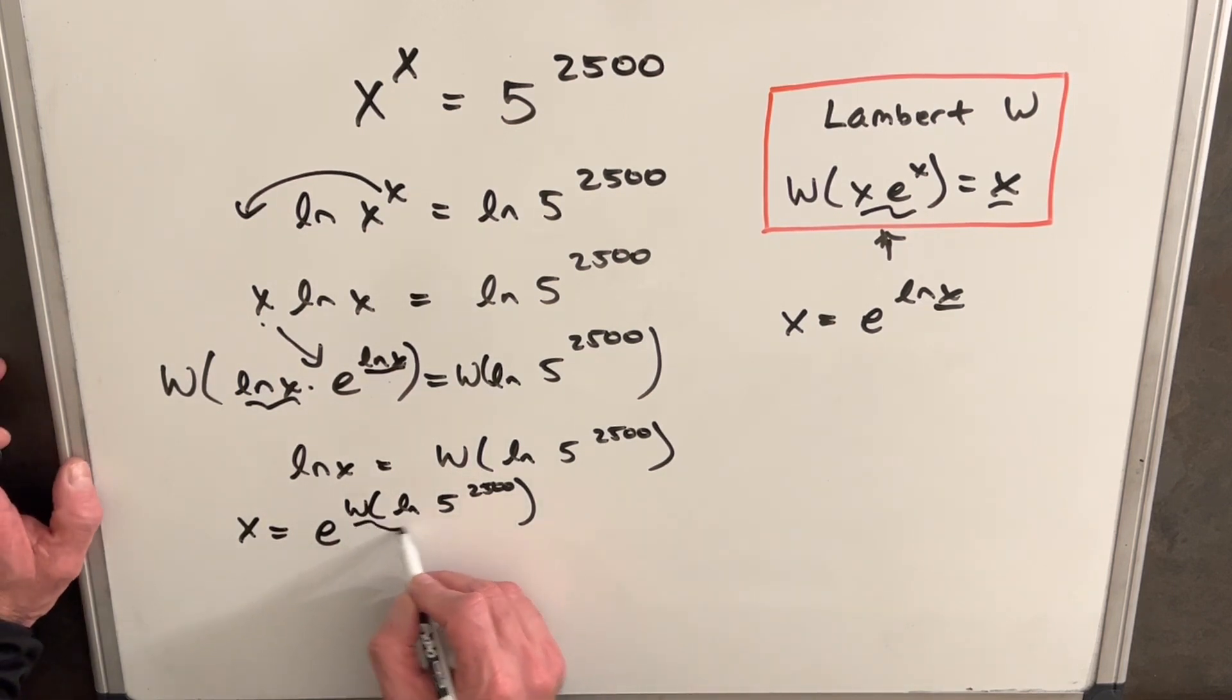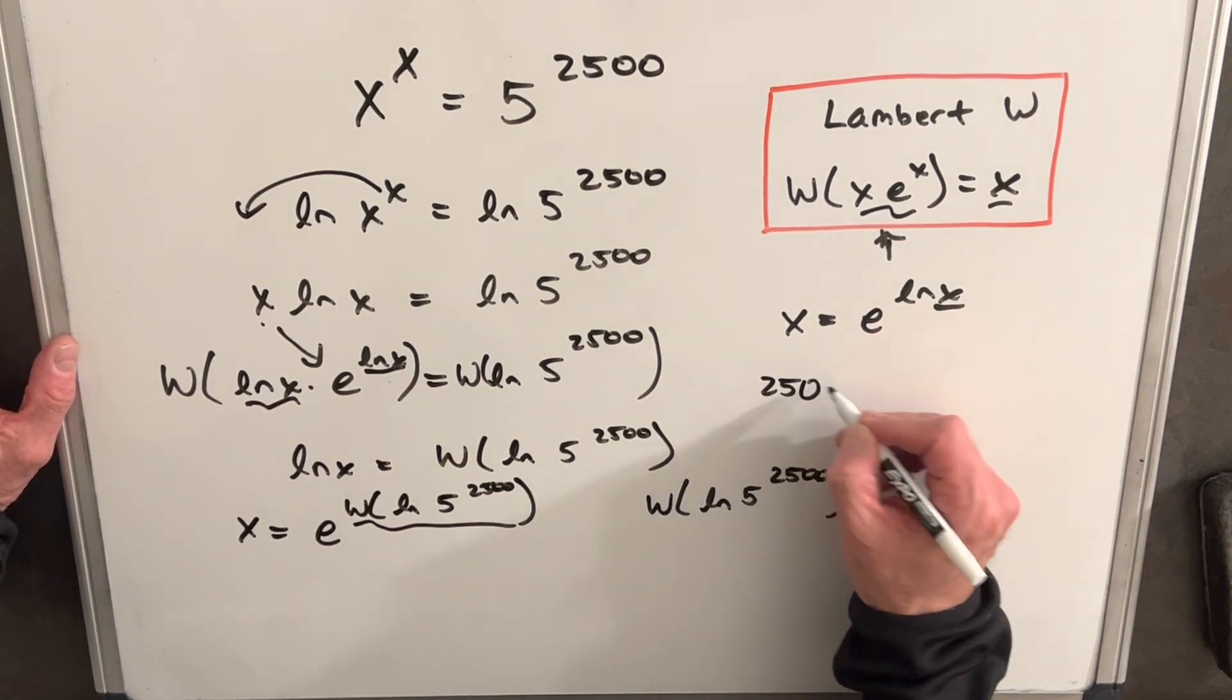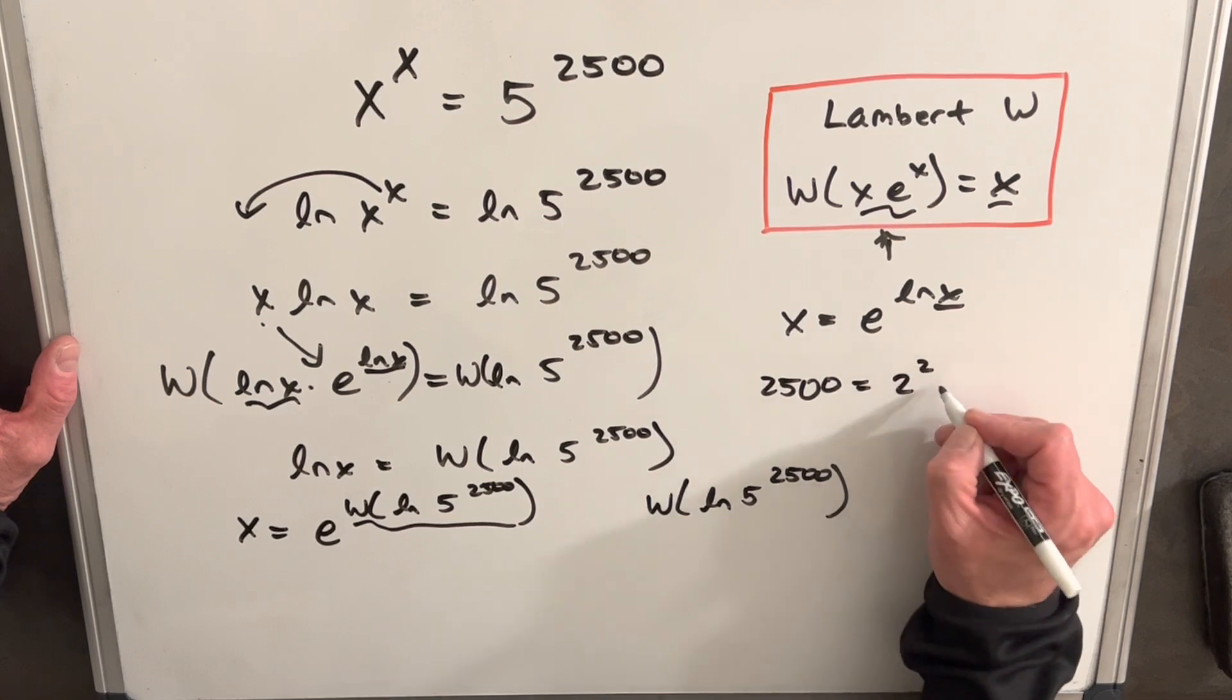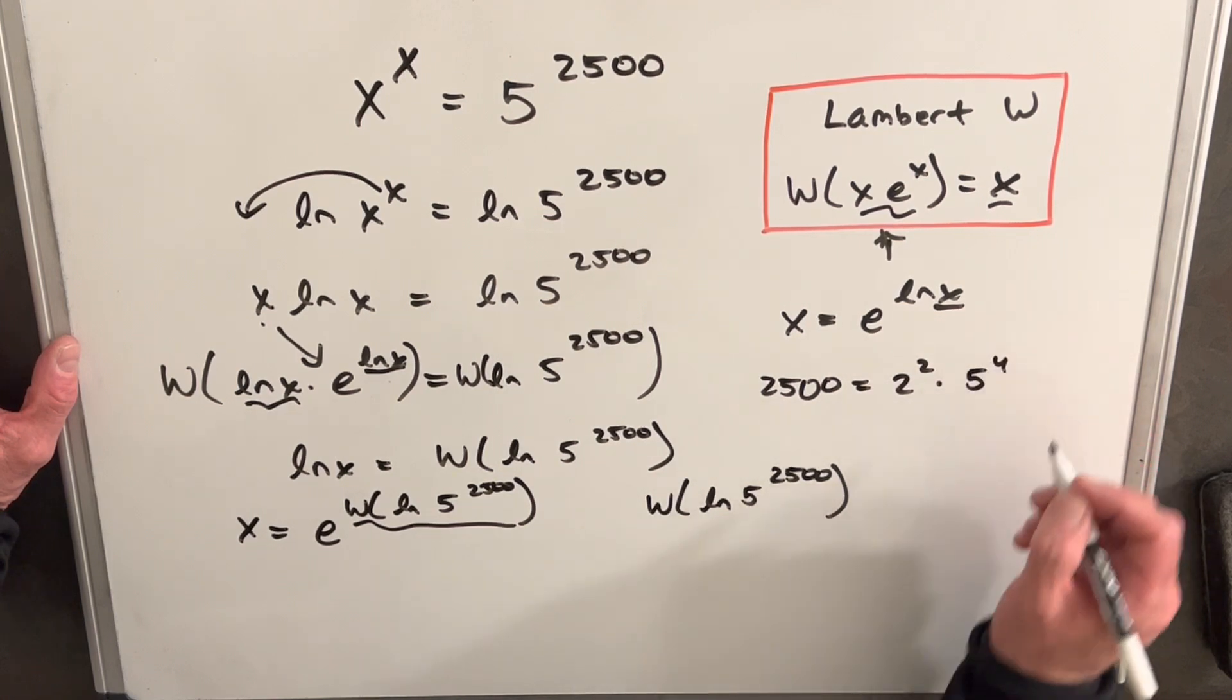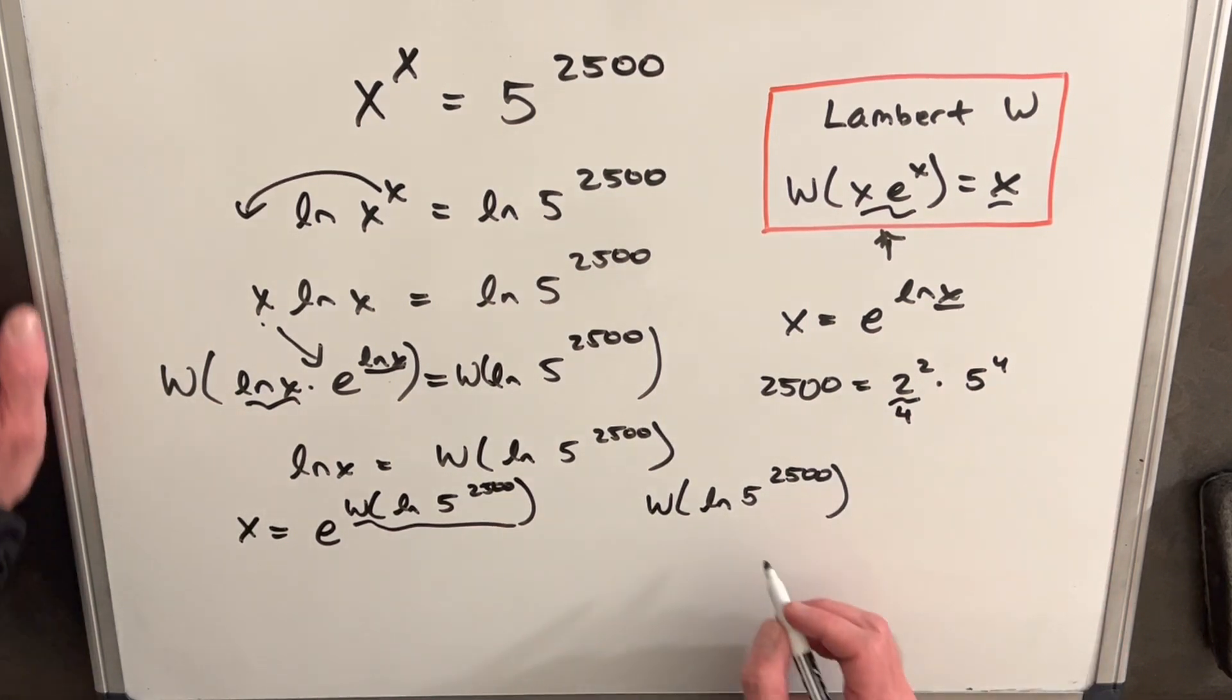So let's just look at this piece. I just want to notice the factorization, the prime factorization of 2,500 is 2 squared times 5 to the 4th. Okay, so this is just a 4 right here.